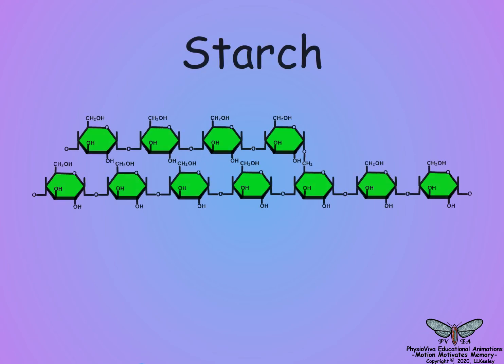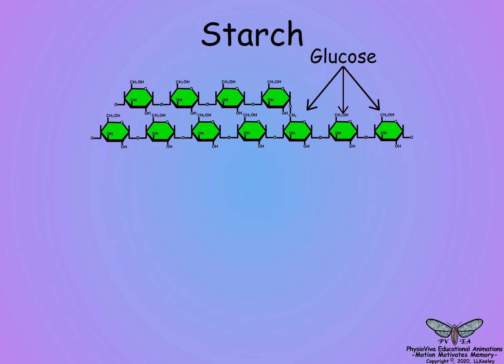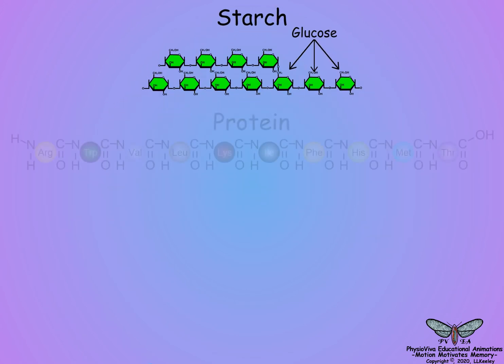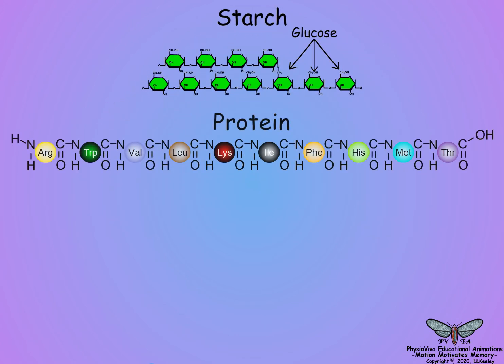Starch chains are uniformly comprised of a single nutrient molecule, namely glucose. By comparison, protein chains are combinations of 20 chemically unique amino acids.